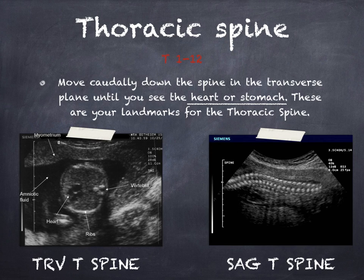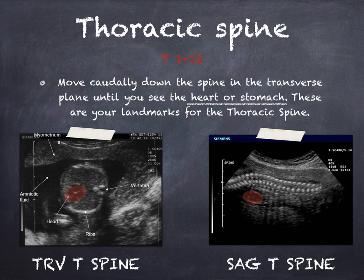Moving down from cervical, we reach the thoracic spine. The heart or the stomach can be your landmark for this view. If you see the kidneys, then you've gone too far — even the slightest movement could move you to the next spinal segment.